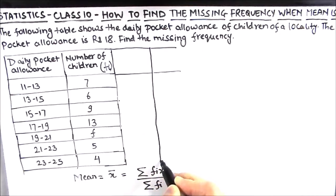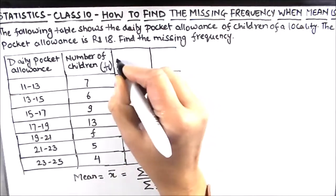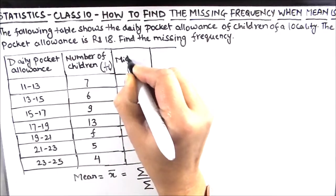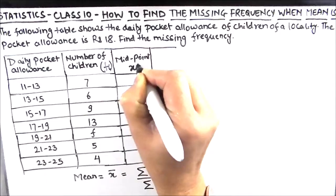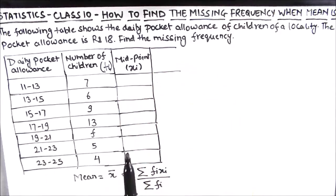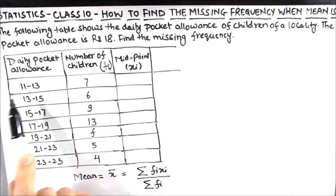So this is our mid term or midpoint, which is denoted as xi. Midpoint we find out by taking the average of the two intervals.